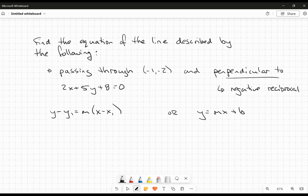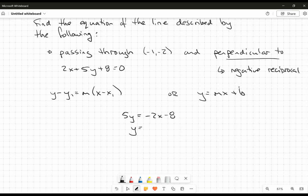And I'm going to do that by solving for y. So 5y will equal -2x - 8. And I'm going to divide by 5. So it will be -2/5 x - 8/5. The slope of this line is -2/5.